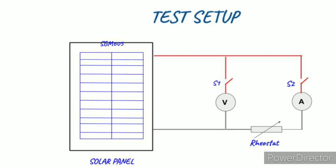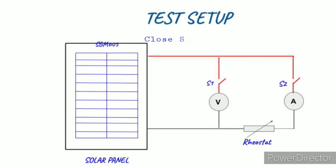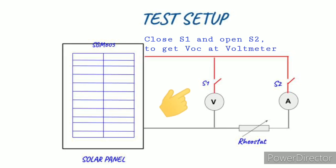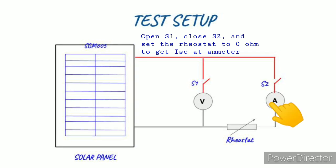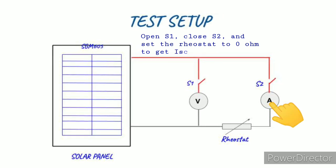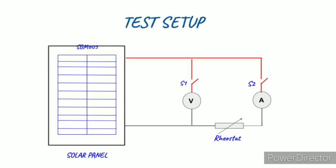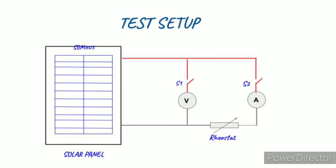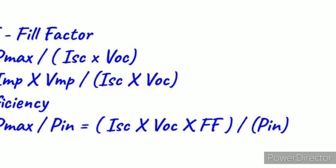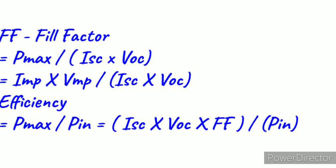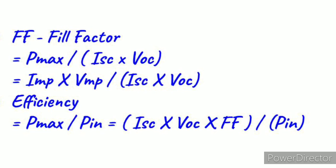As you can see, the test setup consists of a voltmeter, an ammeter and a rheostat to vary the load. We have to tabulate the V and I by varying the rheostat and then calculate the power at each point. After that, the V, I and P curves are plotted as shown in the image. MPP, fill factor and efficiency can be easily deduced from the plot using the equation shown here.